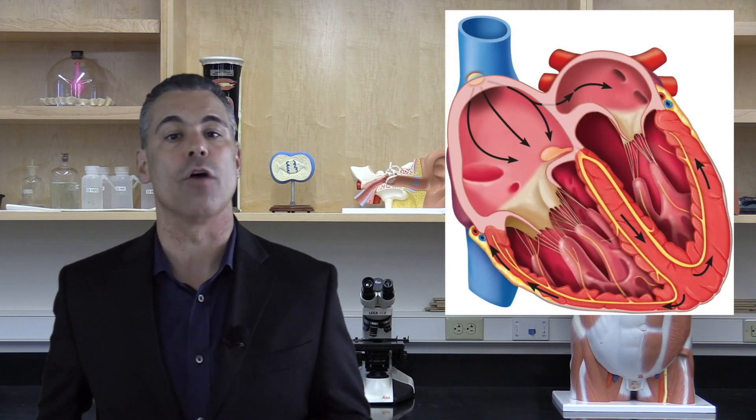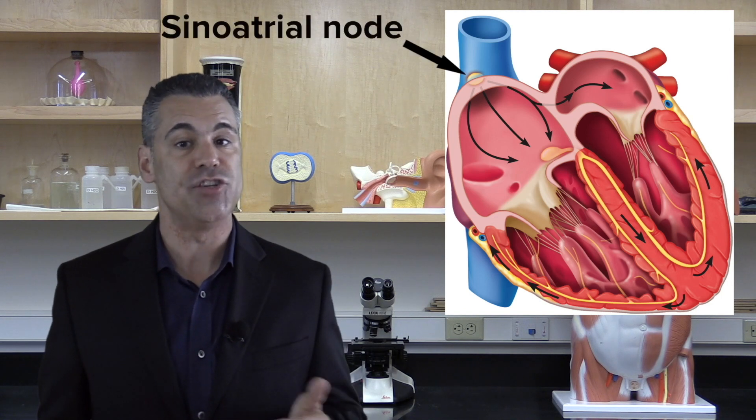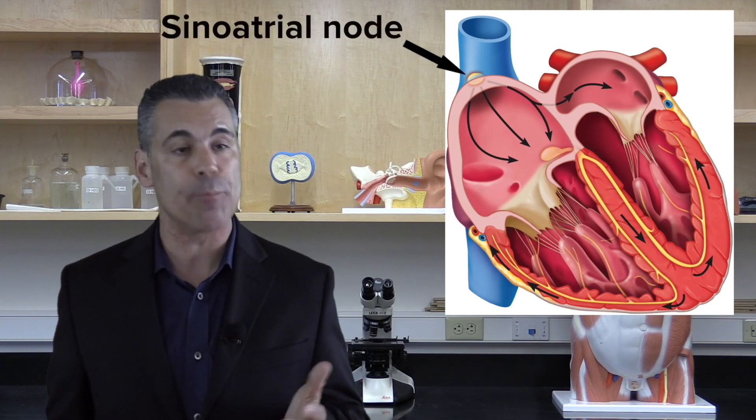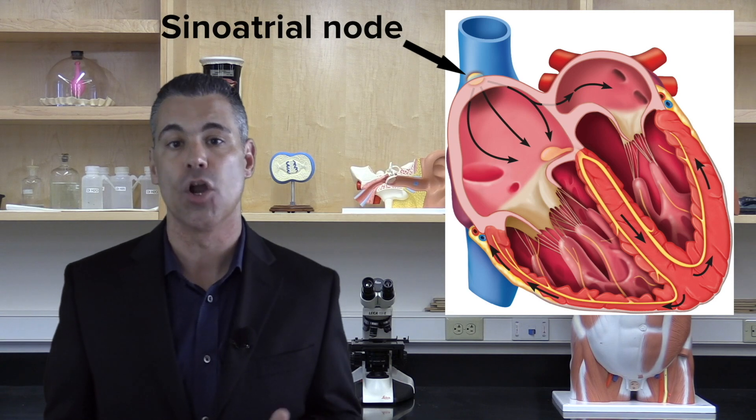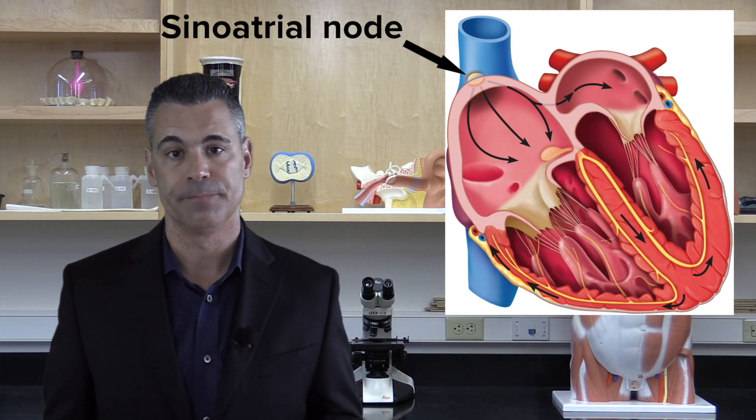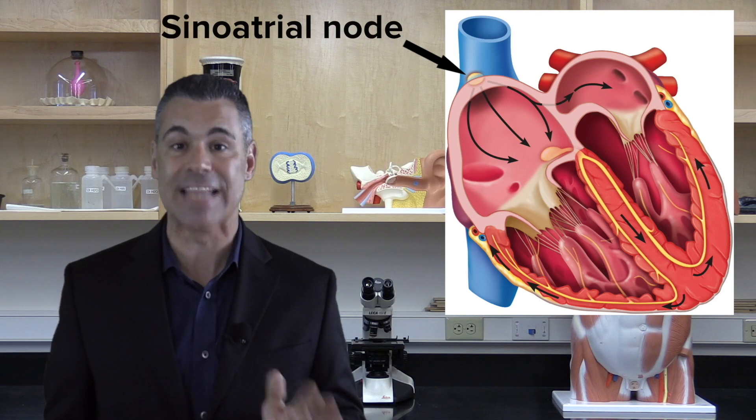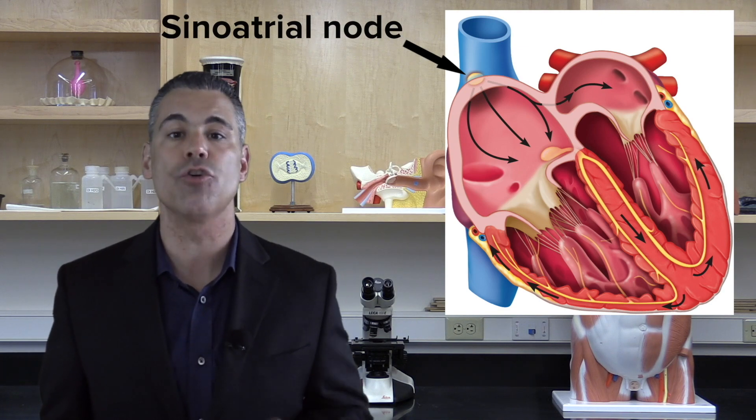It all starts with a group of cells called the sinoatrial node that generate the heart's action potentials without being stimulated by a neurotransmitter released by a presynaptic neuron. I know, it sounds complicated, but let me show you what I mean.